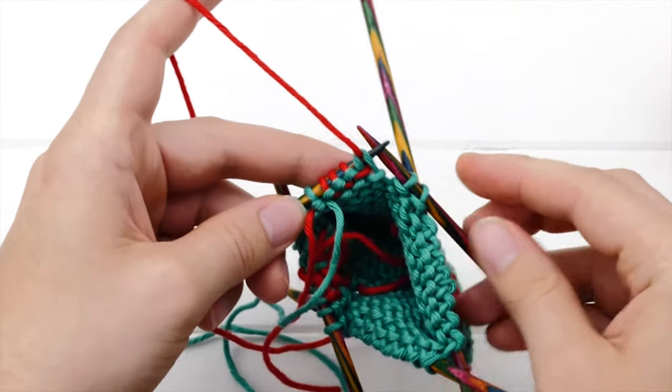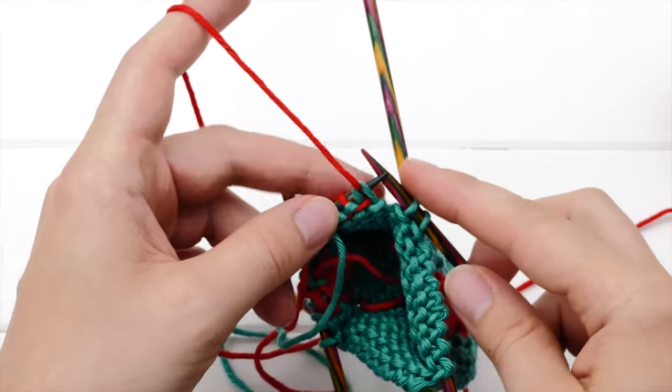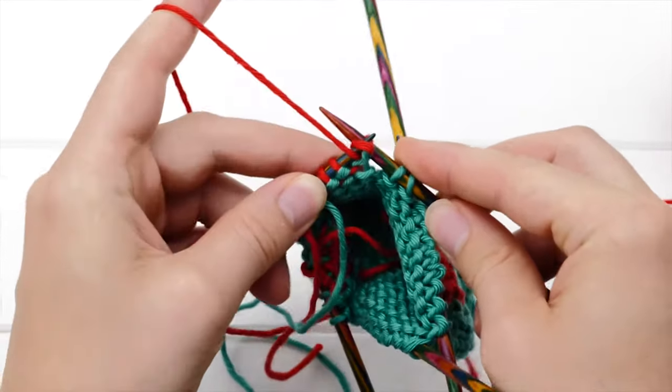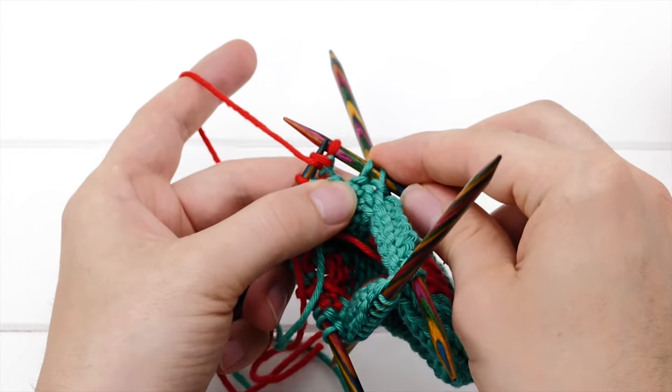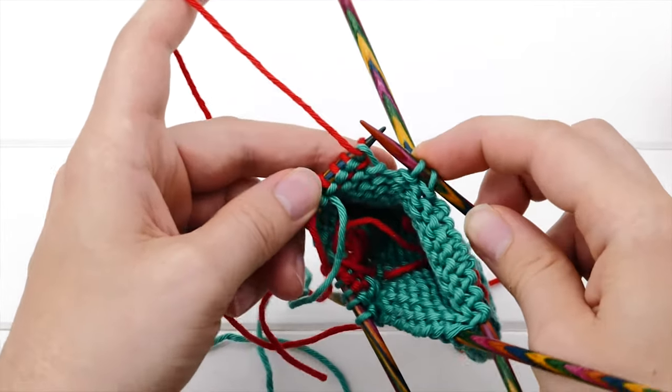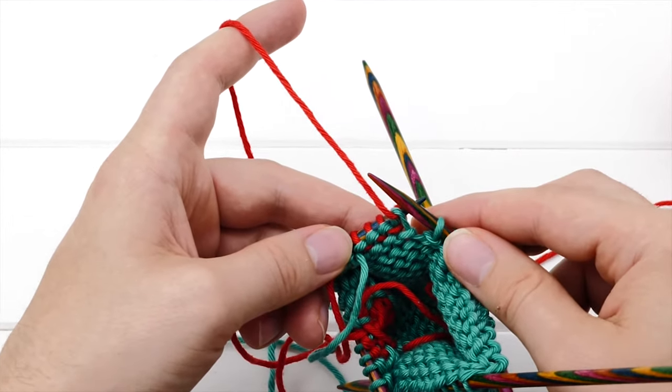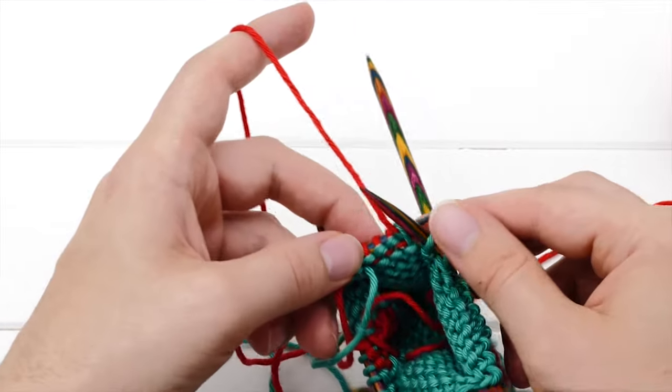And now, we are going to purl in this direction. But if I was just to purl like this, I would create a huge gap here. Well, I don't want that. So, what you have to do is you have to create a provisional join.